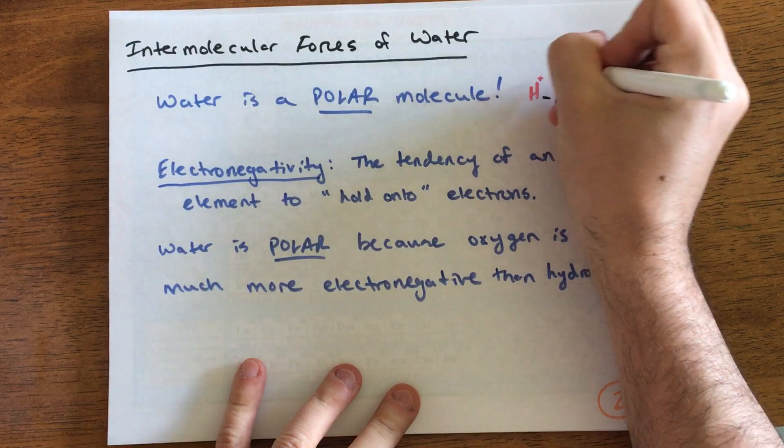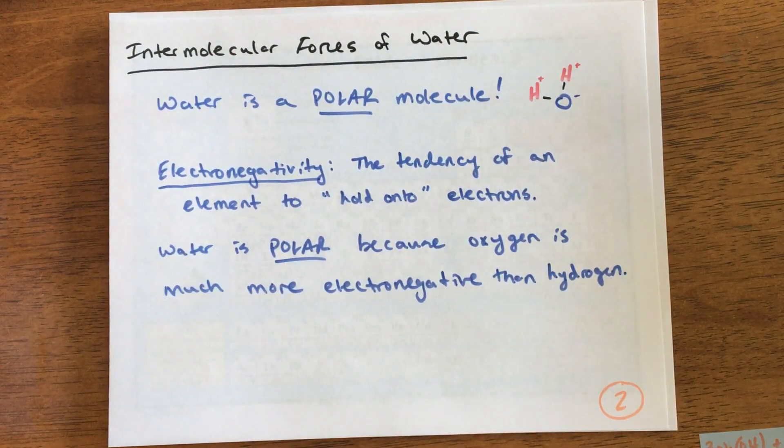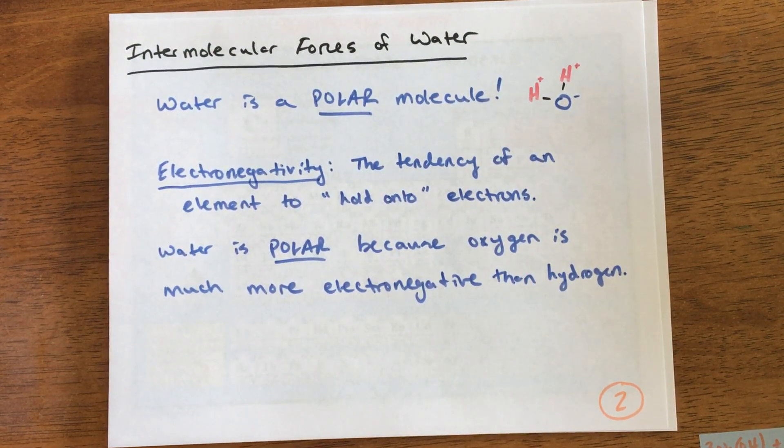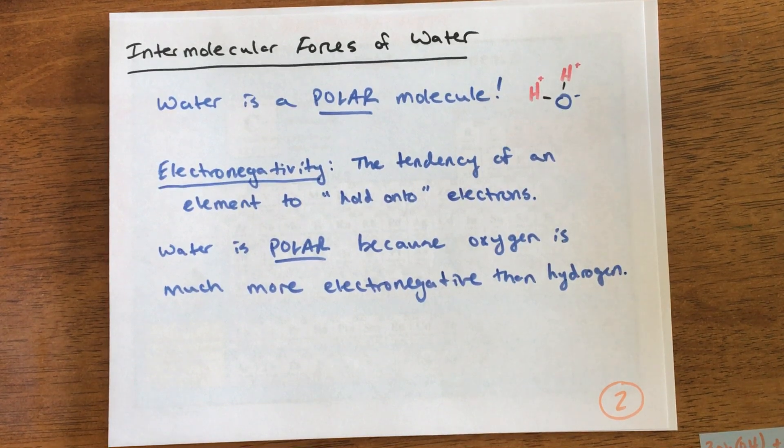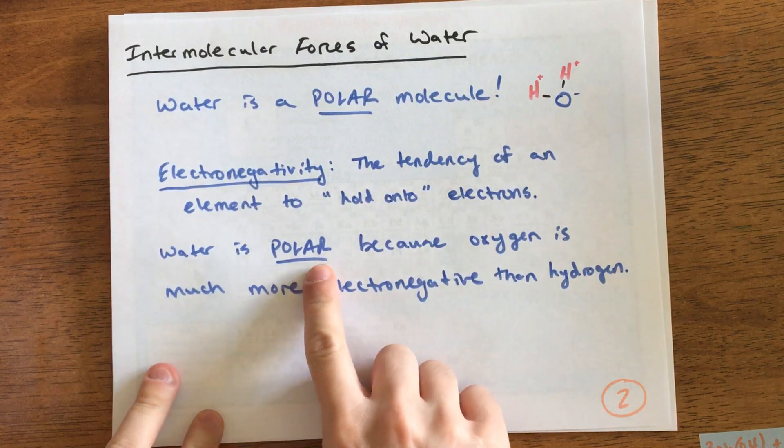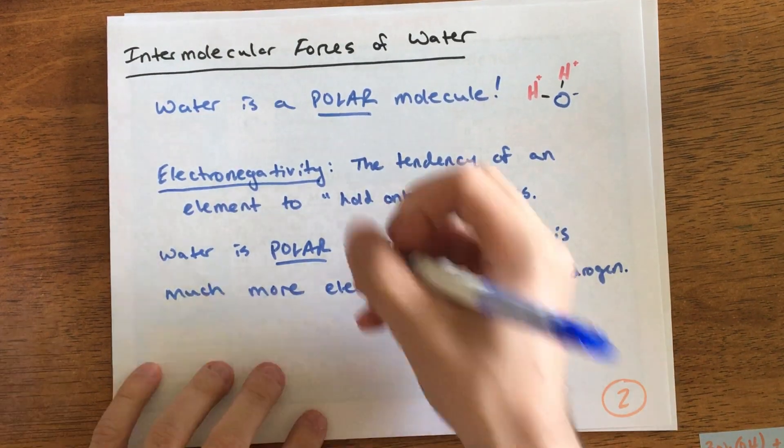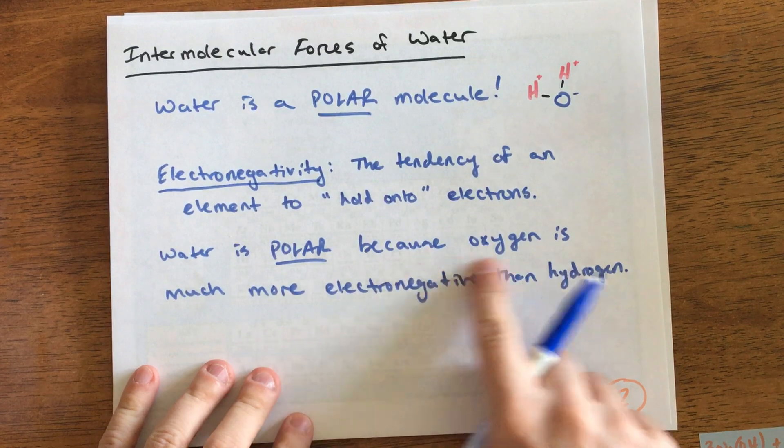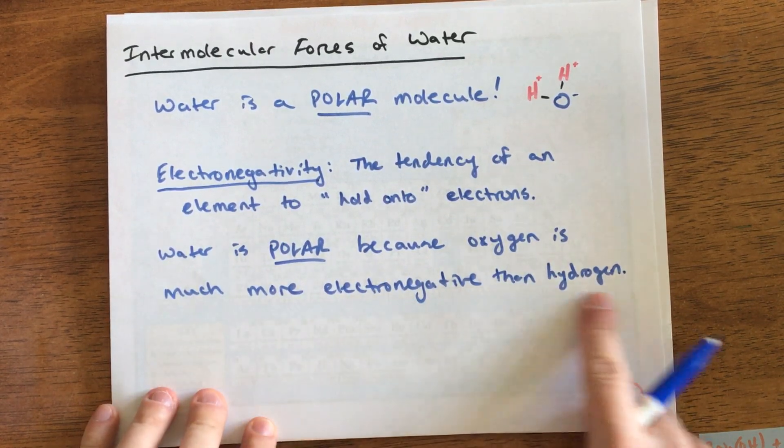The hydrogens have tiny little positive charges. That is not a full positive charge or full negative charge—it just means the hydrogens are a little bit positive and oxygen's a little bit negative. So water is a polar molecule because oxygen is much more electronegative than hydrogen.